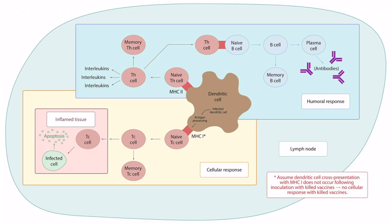This image shows a lymph node, and we can see in the center a dendritic cell. As discussed in the chronic inflammation video, dendritic cells will present antigens to naive helper T cells using MHC class 2. This will activate the helper T cells, which then go on to perform three important roles.